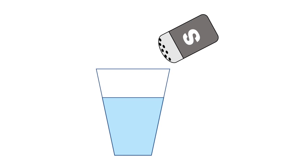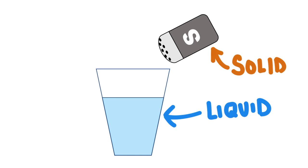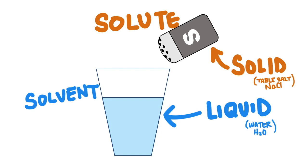We're probably most familiar with solids dissolving into liquids, so we will focus on that process as we describe dissolving. In this case, the solid, like table salt, is called the solute, and the solute dissolves into the solvent, which in this case is water. Together, the solute and the solvent become the solution.